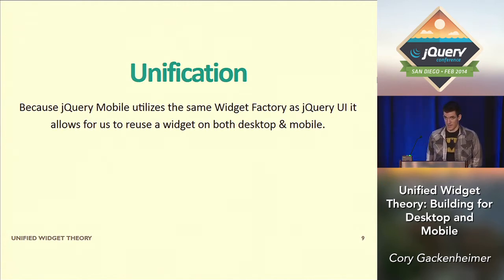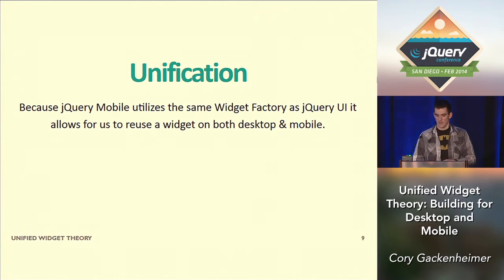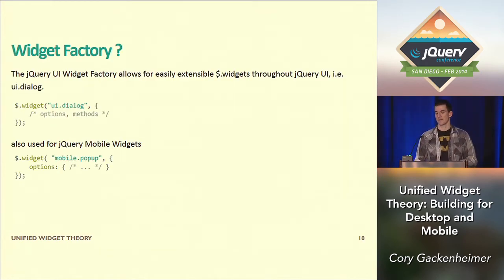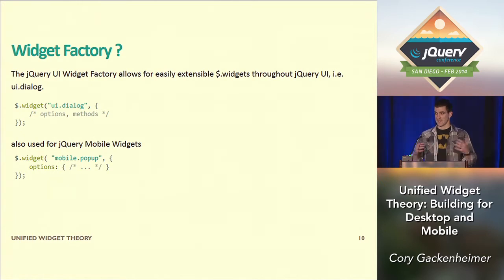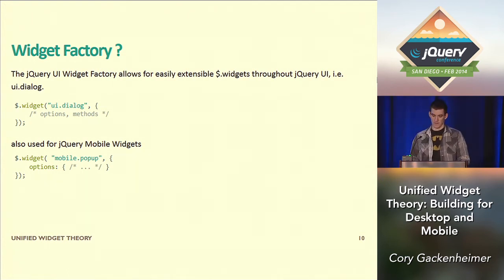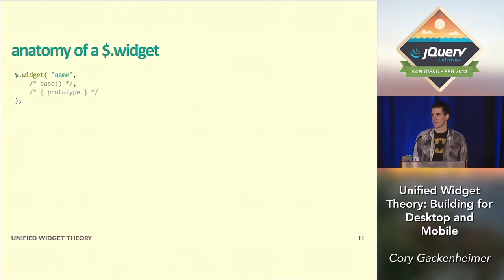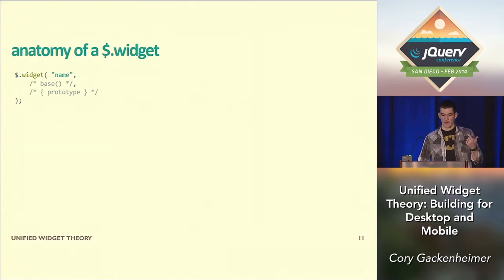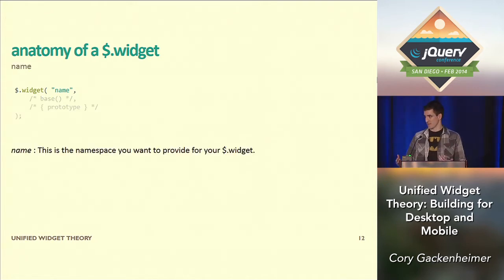Because jQuery mobile and jQuery UI use the widget factory, that allows us to make a single widget that avoids those common pitfalls. The widget factory is the platform originally created for jQuery UI that allows you to write a very extensible widget. It's self-contained, and you can use it anywhere within the framework. jQuery mobile is built upon that as well. You can see here the UI dialog and the mobile popup — that's just the top part of them.